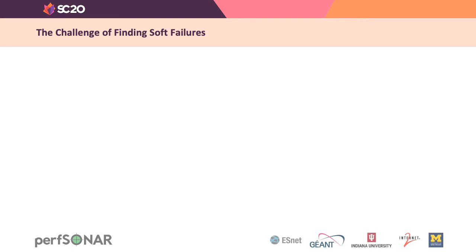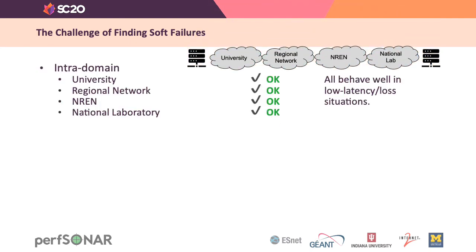Soft failures are challenging to find, but it doesn't mean they can't be run down. Most people start by looking intradomain — they'll look at their own network, for example. In this case, we have a traffic path that consists of four networks: a university network, a regional network, a national research and education network, and a network at a national laboratory. All four of these may test out just fine in isolation because their latency and loss are low enough that they don't cause problems. It's when you start doing things interdomain that it gets interesting.